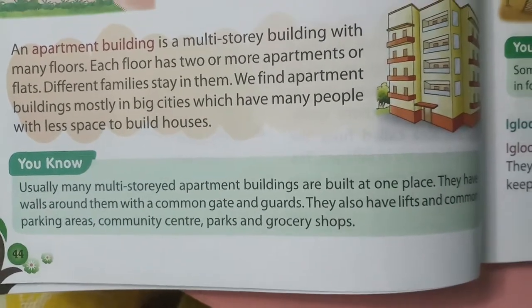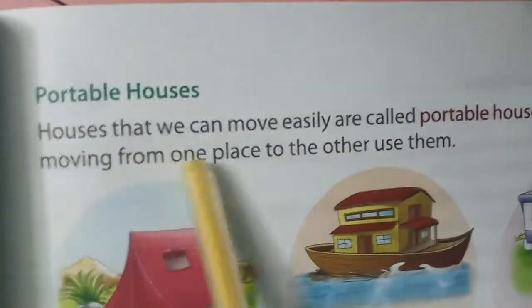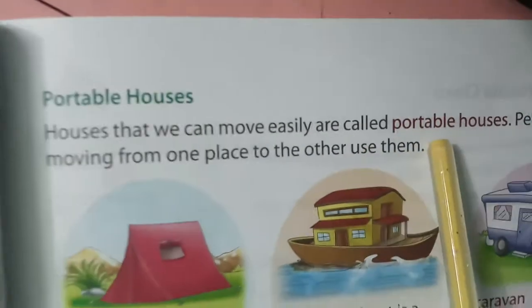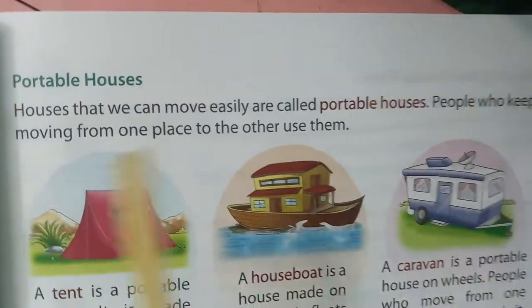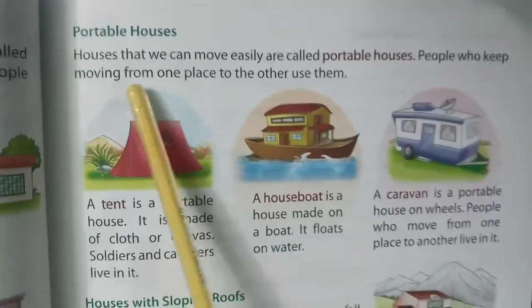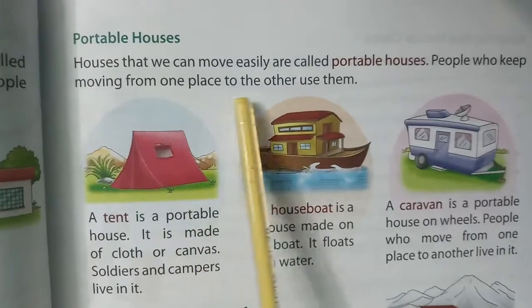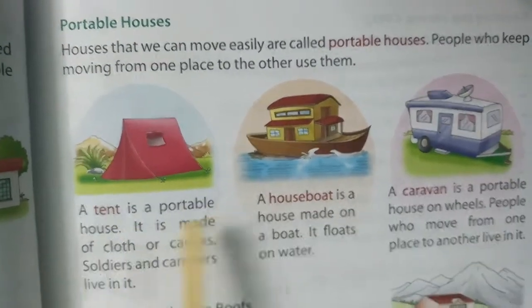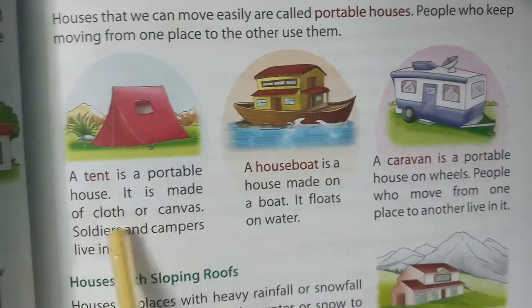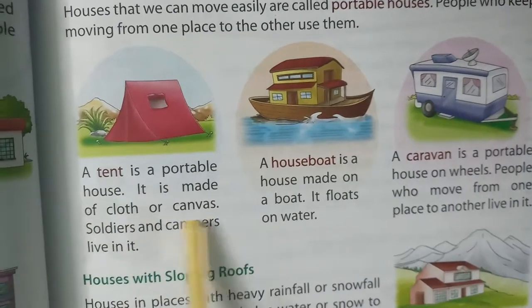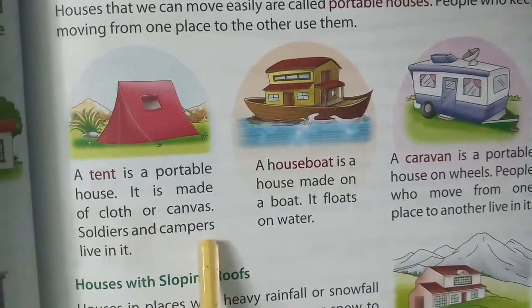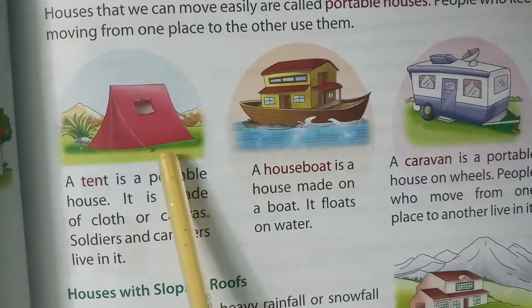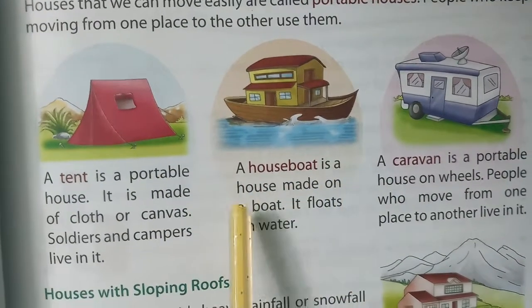Portable houses — houses that we can move easily are called portable houses. People who keep moving from one place to another use them. A tent is a portable house. It is made of cloth or canvas. Soldiers and campers live in it.